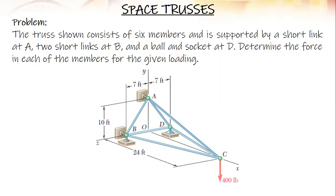In this video I'm going to share how to analyze a simple space truss. Here's the problem: The truss shown consists of six members and is supported by a short link at A, two short links at B, and a ball and socket at D. Determine the force in each of the members for the given loading.